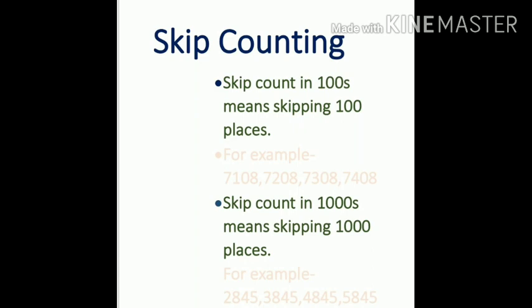Now let's see skip counting in thousands. Skip counting in thousands means skipping the 1000th place digit — the digits at the hundreds, tens, and ones place remain the same. For example: 2845, 3845, 4845, 5845. We only change the digit at the 1000th place: 2, 3, 4, 5.